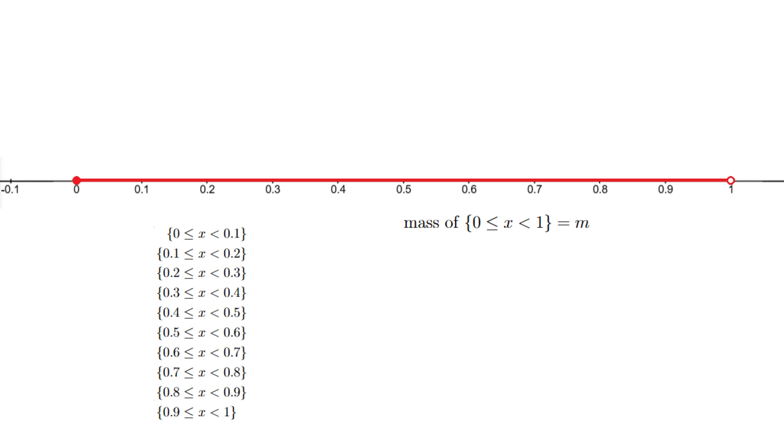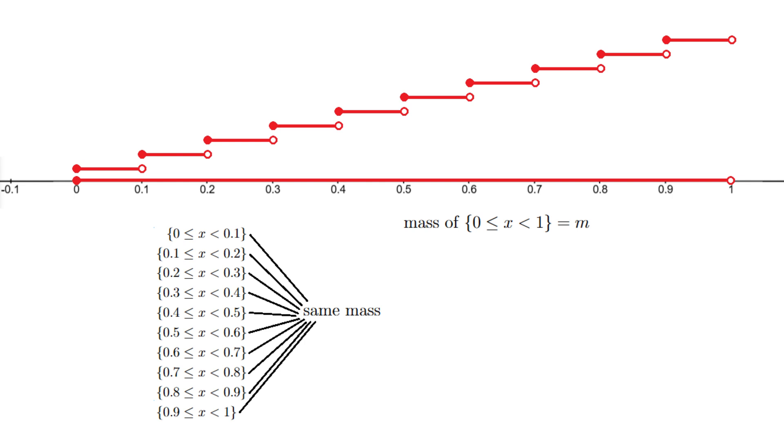We can divide this stretch of the number line into 10 parts, where the first part is the stretch going from 0 inclusive up to 0.1 exclusive, the second part is the stretch going from 0.1 inclusive up to 0.2 exclusive, the third part is the stretch going from 0.2 inclusive up to 0.3 exclusive, and so on until we reach the tenth part, which is the stretch going from 0.9 inclusive up to 1 exclusive. Since the number line has uniform density along its length, all of these 10 pieces have the same mass as each other, and since these 10 pieces together constitute the original stretch going from 0 inclusive up to 1 exclusive, the total mass of these 10 pieces is precisely the mass of the original stretch, namely m. So the mass of each one of the 10 pieces is equal to a tenth of m.